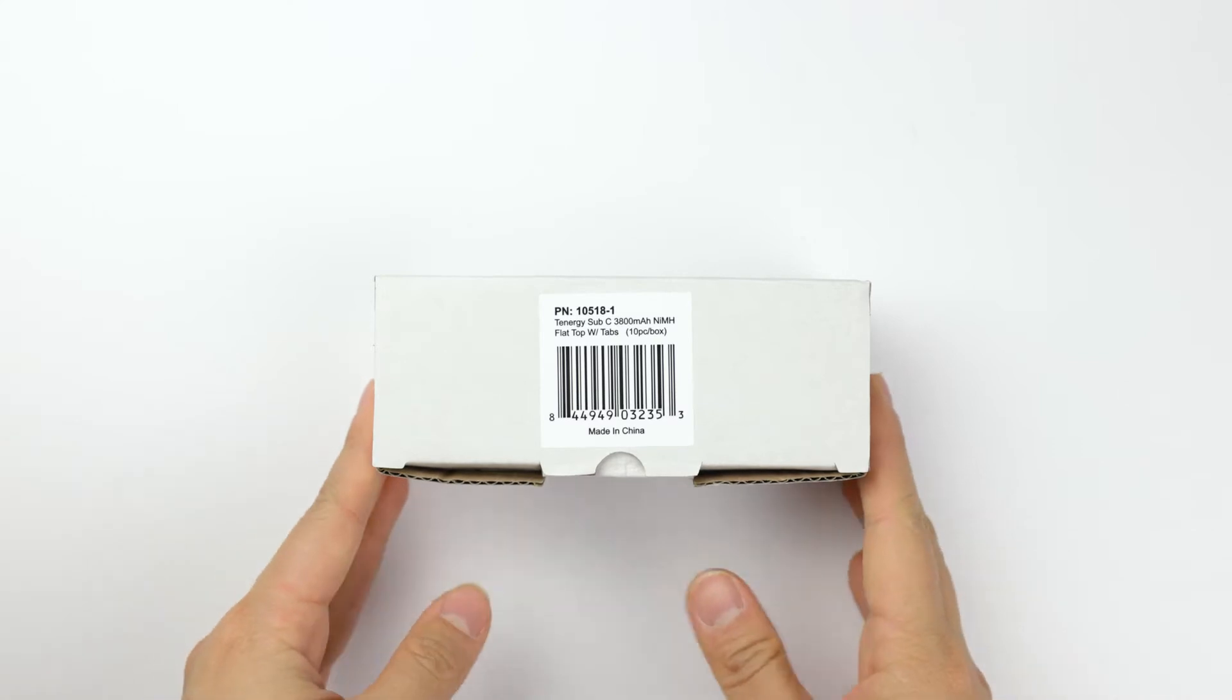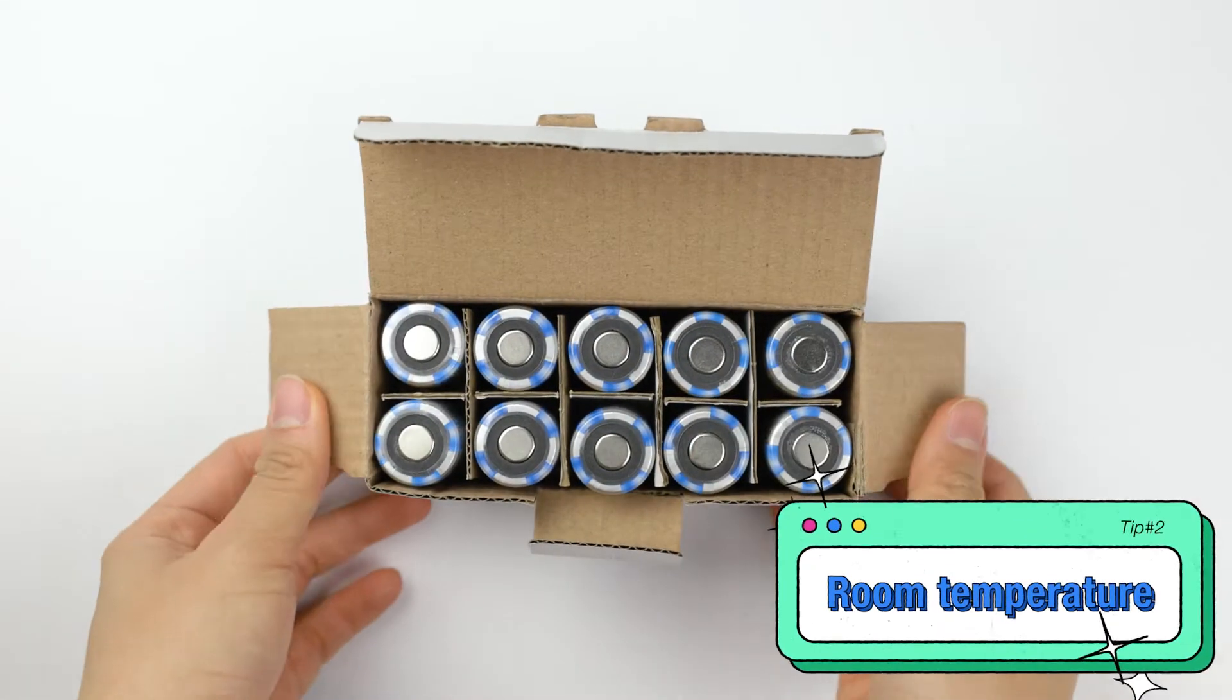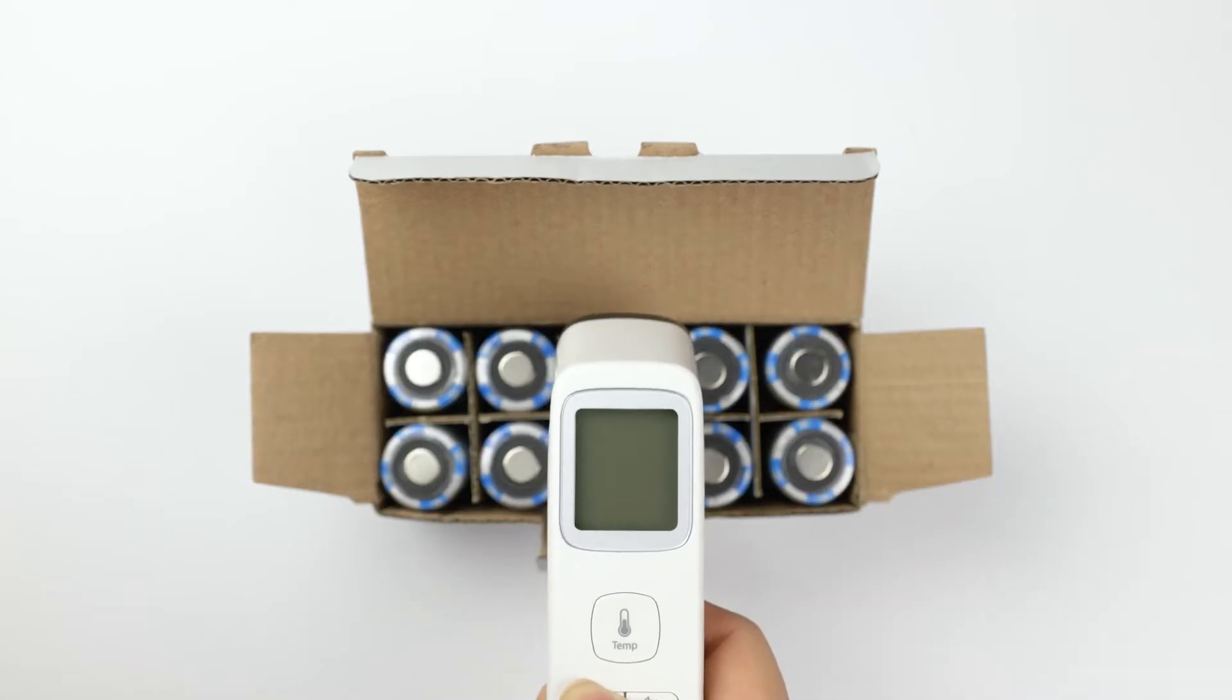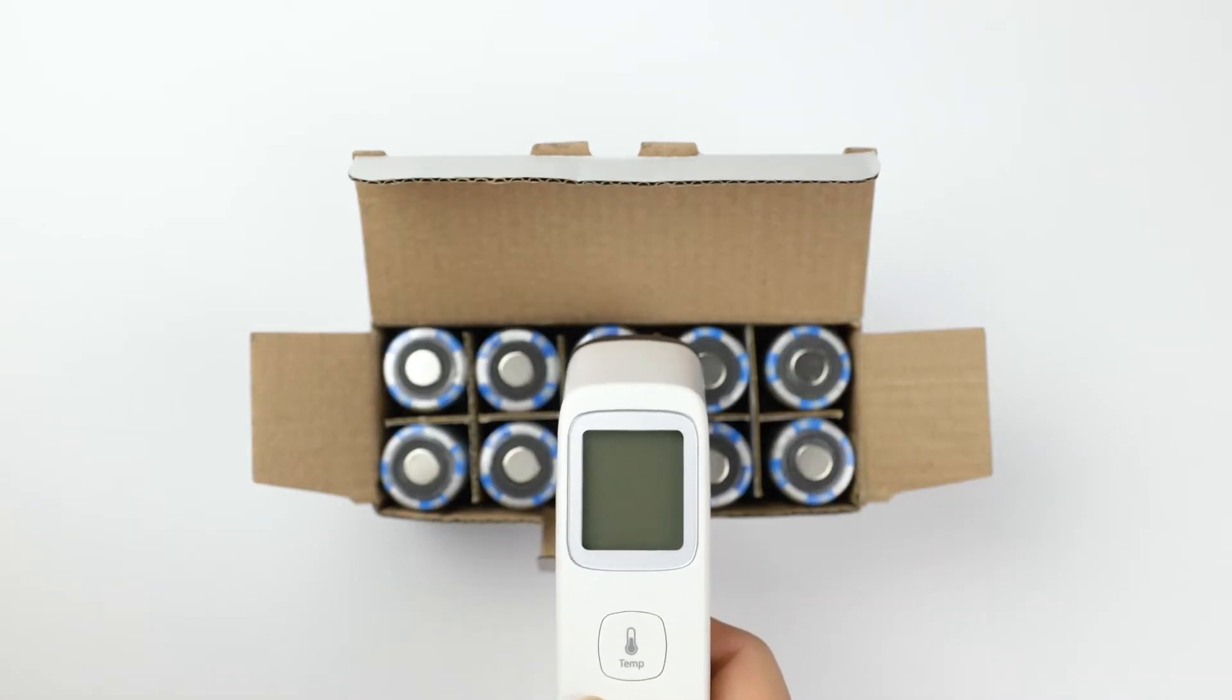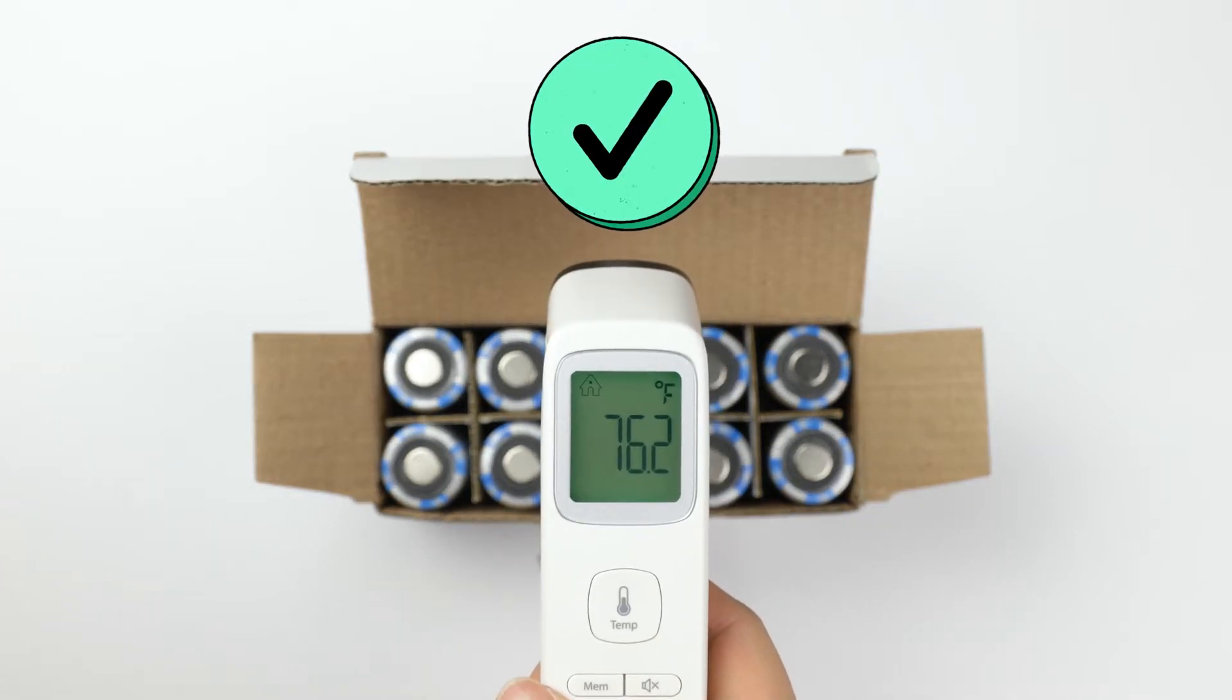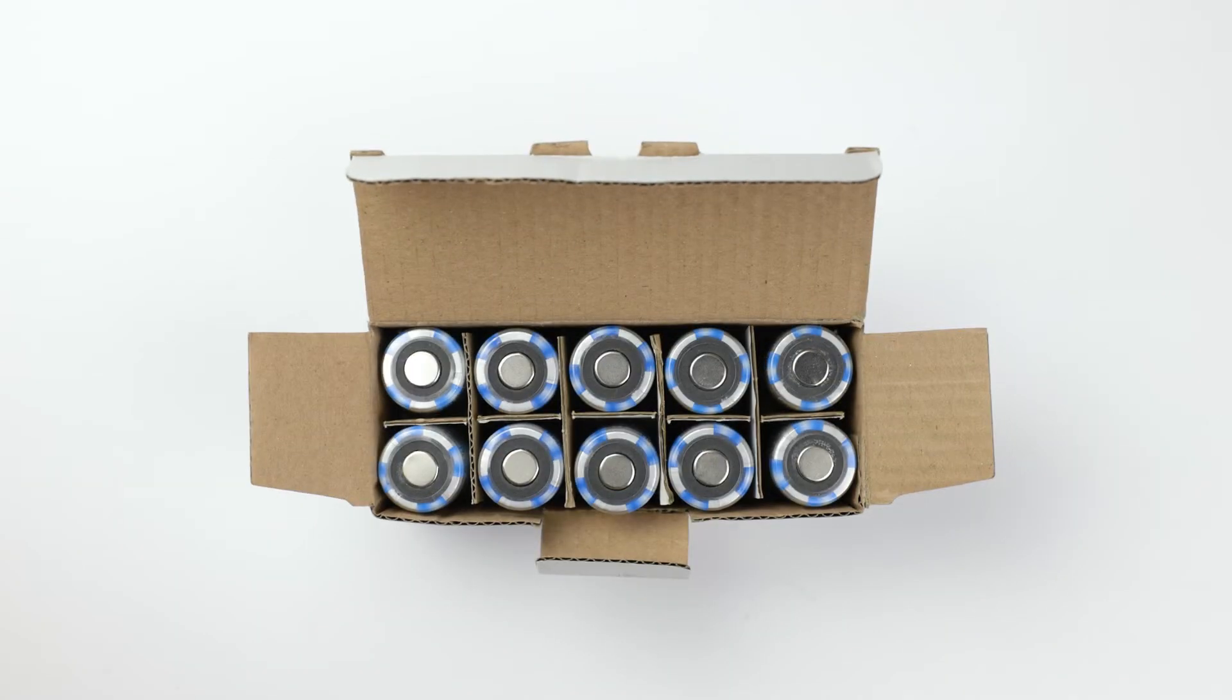Another tip before getting into soldering is to keep the battery at room temperature. As you already know, high heat reduces the battery's performance. Using warm or hot cells for soldering will amplify the stress on the batteries. So if you find the cells are too warm or hot after charging or being outside in warm weather, we recommend bringing them into a cool dry location and waiting for them to cool down before soldering them.